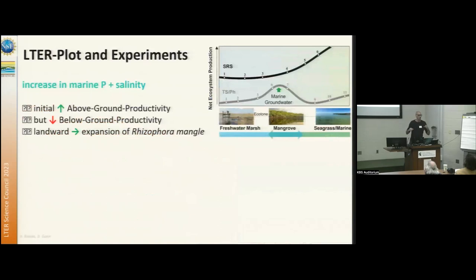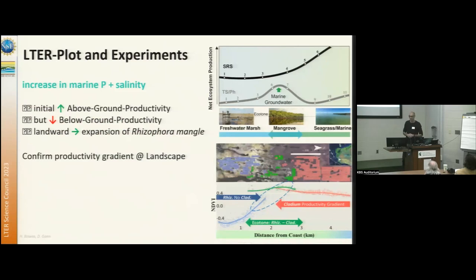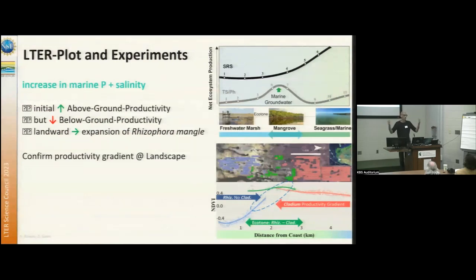Going down to the site in the southeastern saline Everglades — we know from our long-term data that increases in phosphorus and salinity lead to an increase in productivity of above-ground vegetation, but also a decrease in below-ground productivity. We also found landward migration of mangroves, which is not surprising with sea level rise. We used NDVI mapped against distance from the coast for two communities — mangroves and cladium — and we see a productivity increase where the confluence of marine and freshwater happens, exactly as expected.